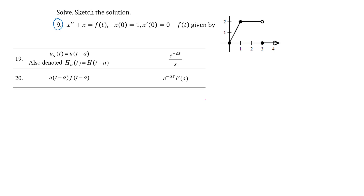The first thing we need to do is write our function f(t) using the unit step function. The unit step function outputs 0 when t is less than a, and 1 when t is greater than or equal to a. My f(t) function is shown in the graph — it's made up of line segments. I'm going to be writing equations of lines, but I need to turn them off and on at the appropriate times. We'll start with the line that goes from (0,0) to the point (1,2).